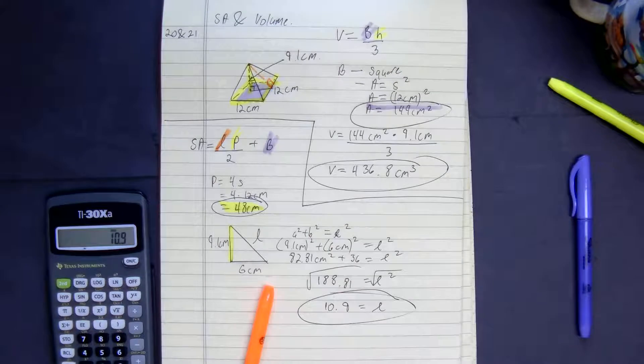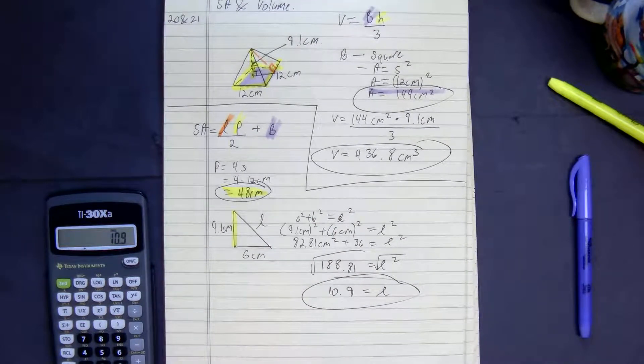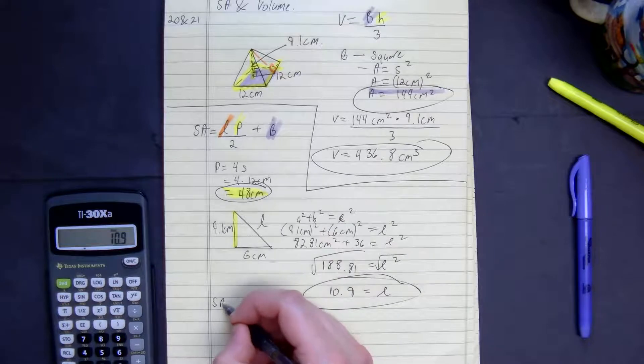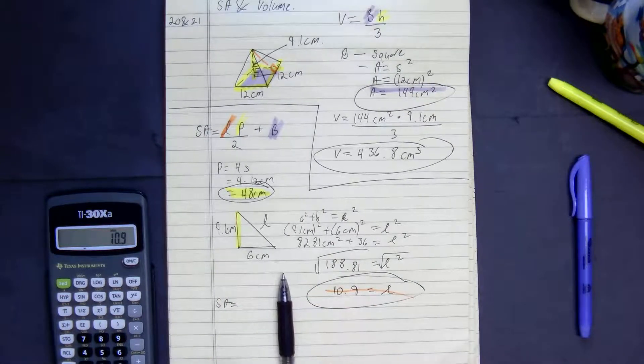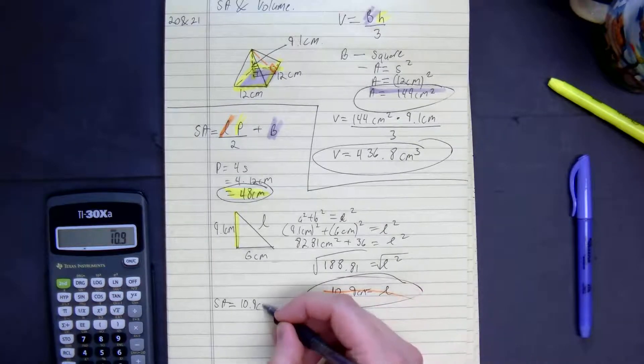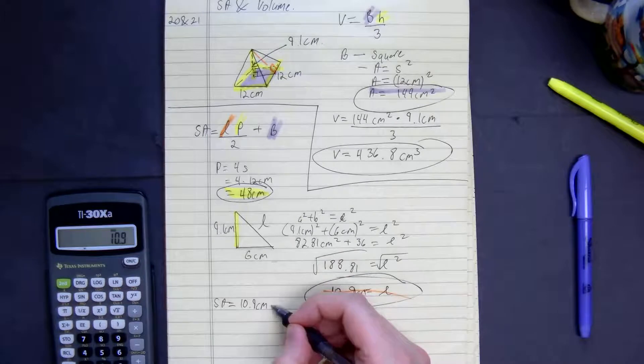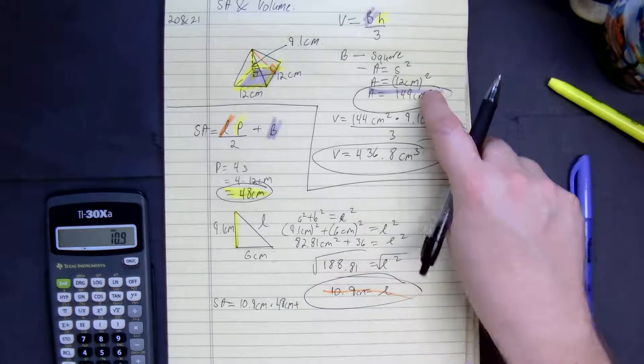So we can finally find the surface area of this. So let's do that. Surface area is equal to the slant, 10.9 centimeters times the perimeter, 48 centimeters, all added to 144.